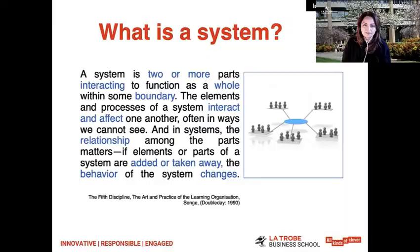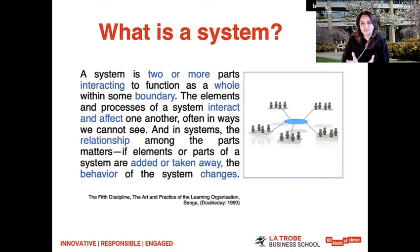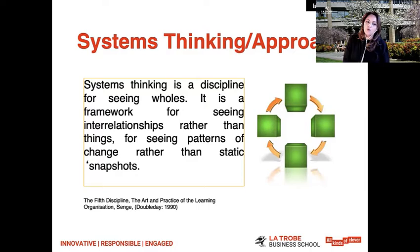From the video, we can see that a system is two or more parts interacting to function as a whole within some boundary. The elements and processes of a system interact and they affect one another, often in ways that we cannot see. In systems, the relationship among the parts matters. If elements that are part of the system are added or taken away, the behavior of the whole system then changes. It's important to understand that a system is made up of a number of parts, but you need to look at the whole and how those parts interact in order to make the whole function. The tools and habits of systems thinking help us to identify when our or others' short-term solutions may have dangerous long-term consequences.